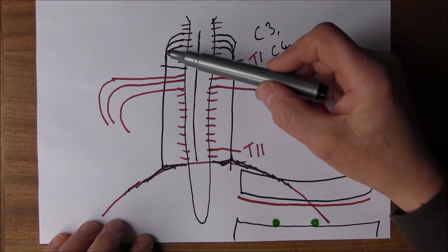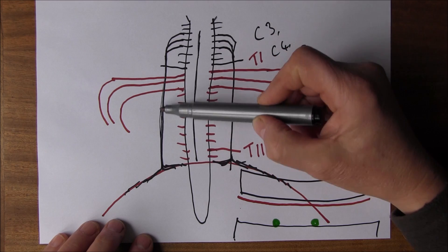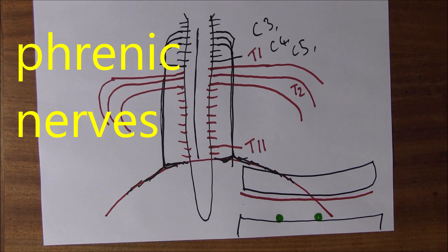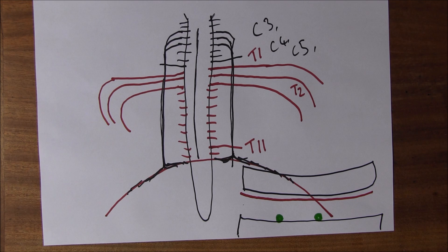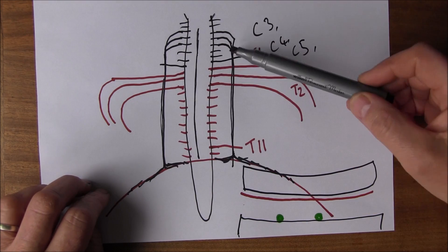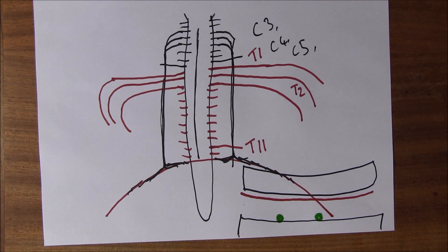The nerves running down each side to the diaphragm are called the phrenic nerves. 'Phrenic' means to do with the diaphragm - this is where we get the term 'schizophrenia' from, because the Greeks thought the mind was largely in the diaphragm: 'split diaphragm.' Remember, the phrenic nerves come off from C3, C4, C5 - quite an amazing defence mechanism built into the very anatomy of the body.